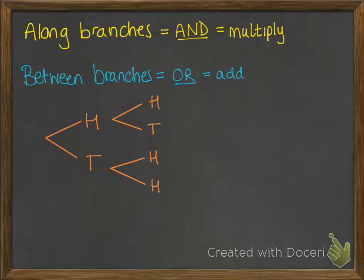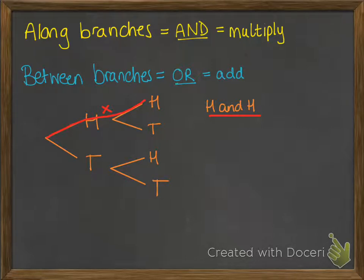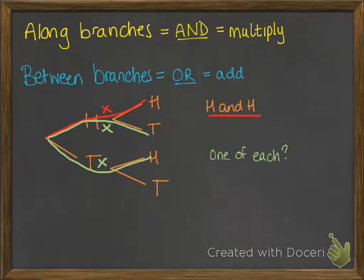If we think about this as tossing two coins, we can have heads or tails followed by heads or tails. So how could we get a head and a head? That would be that top branch — going along the branch means we multiply those probabilities. How about getting one of each? That would be either a head and a tail or a tail and a head. Going along those branches means we multiply, and we can get one or the other, so we add those together.